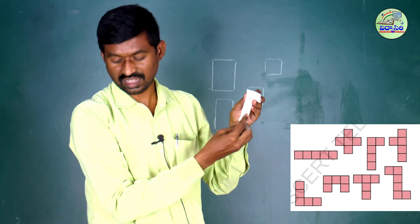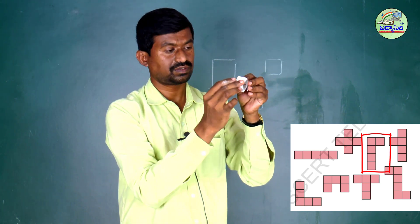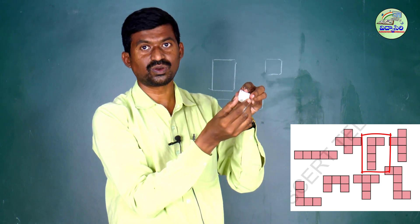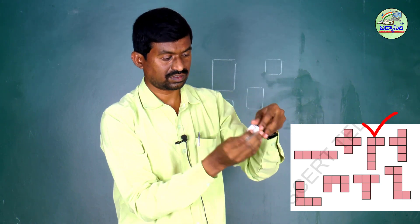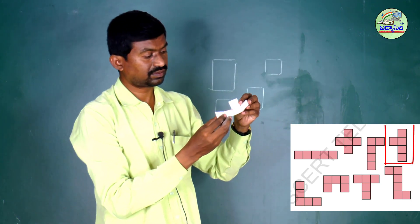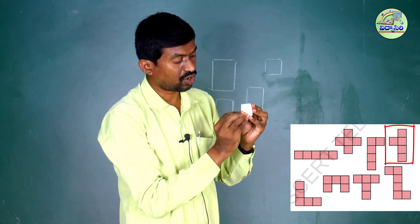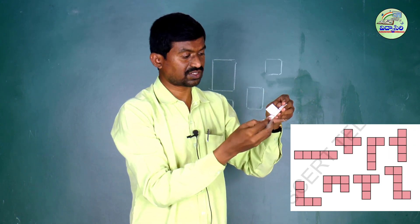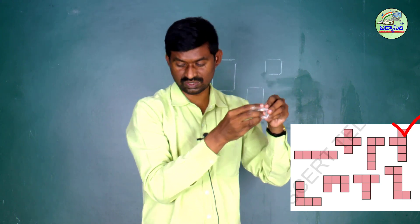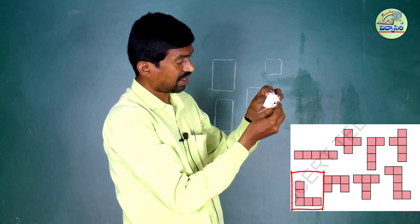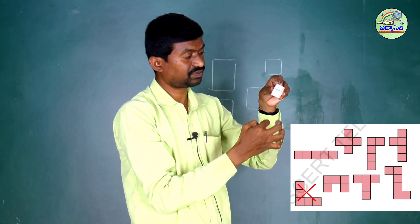I am taking another one — third one. See, I am folding. This one also looks like an open box. This net also looks like an open box. This also makes an open box. This net also is making it. I am folding in the slot. The net also looks like an open box.